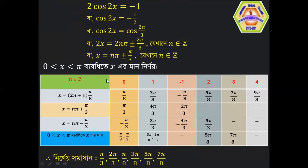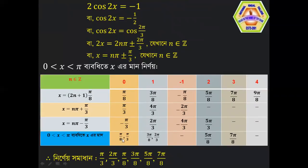From the solutions, we have x = −π/3 as one value and another value. The solutions include x = 3π (first point), x = 4π/3 (second point), and x = 2π/3 (third point). Further values include 7π/8 and 9π/8.